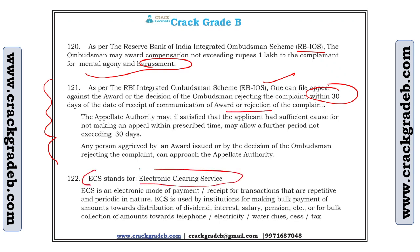ECS stands for Electronic Clearing Service. When you buy a vehicle and take a loan, your EMI is automatically deducted from your savings account each month — this happens through ECS. For example, if you took a loan from HDFC but hold an account in SBI, HDFC will come to SBI and collect the EMI amount. This is known as Electronic Clearing Service. ECS also works for insurance policy premium payments.